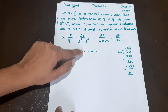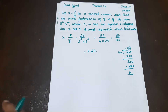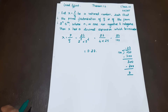Theorem 1.6 and Theorem 1.5 say the opposite of each other — they are converses. Theorem 1.5 says: if the decimal expansion terminates, then q will be of the form 2 raised to the power n, 5 raised to the power m. Theorem 1.6 says the reverse of that.